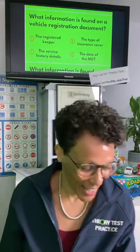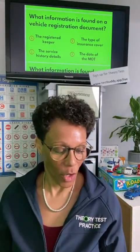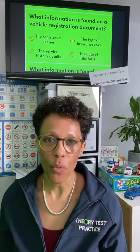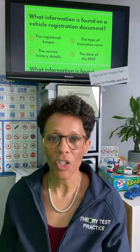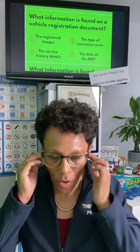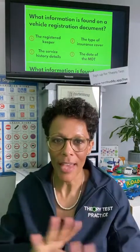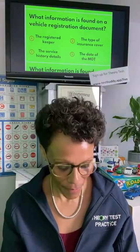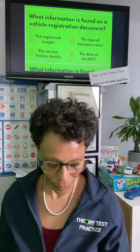Next question: what information is found on a vehicle registration document? Is it A: the registered keeper; B: the type of insurance cover; C: the service history details; or D: the date of the MOT? Try to eliminate the answers that are obviously wrong — it'll make it much easier to get this one correct.